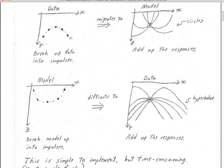So let me ask you: what should you get? What in the model did this diffraction hyperbola come from? If you think about what in a cross section should give you one single diffraction hyperbola — what would it be? Or another way of asking: what would this diffraction hyperbola in the data migrate into? It's just a point. So this diffraction hyperbola should come from one point reflector or point diffractor in the cross section.